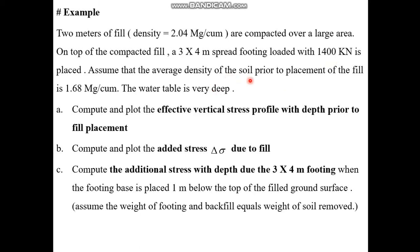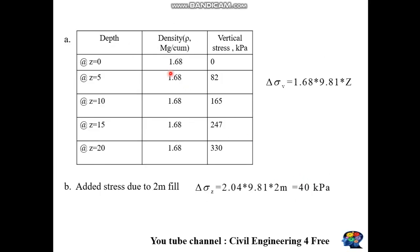The footing carries a concentrated load of 1400 kN. The average soil density before fill placement is 1.68 Mg/m³, and the water table is very deep. We need to compute: (a) effective vertical stress distribution prior to fill placement, (b) added stress due to compacted fill, and (c) additional stress due to the 3×4m footing.